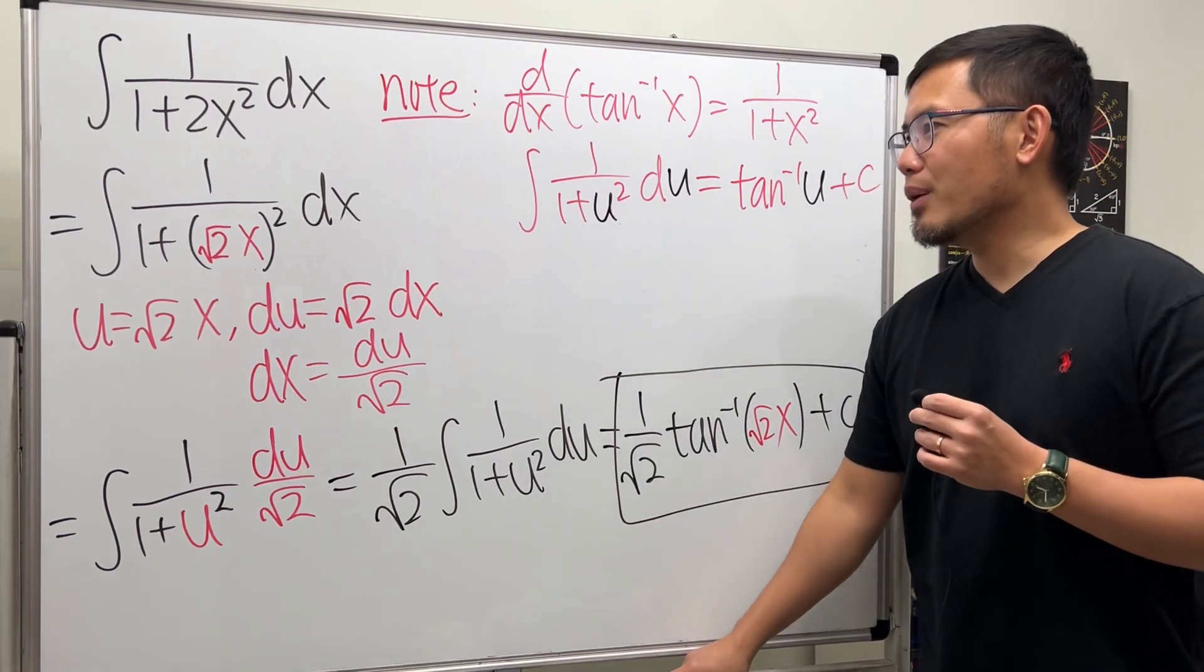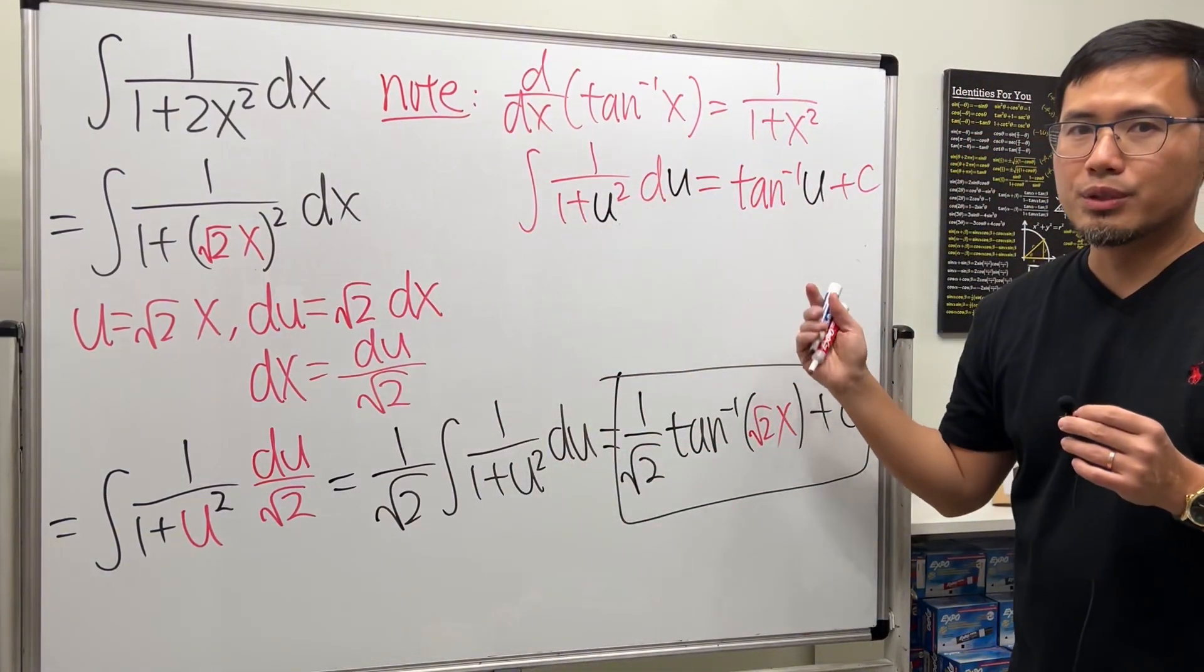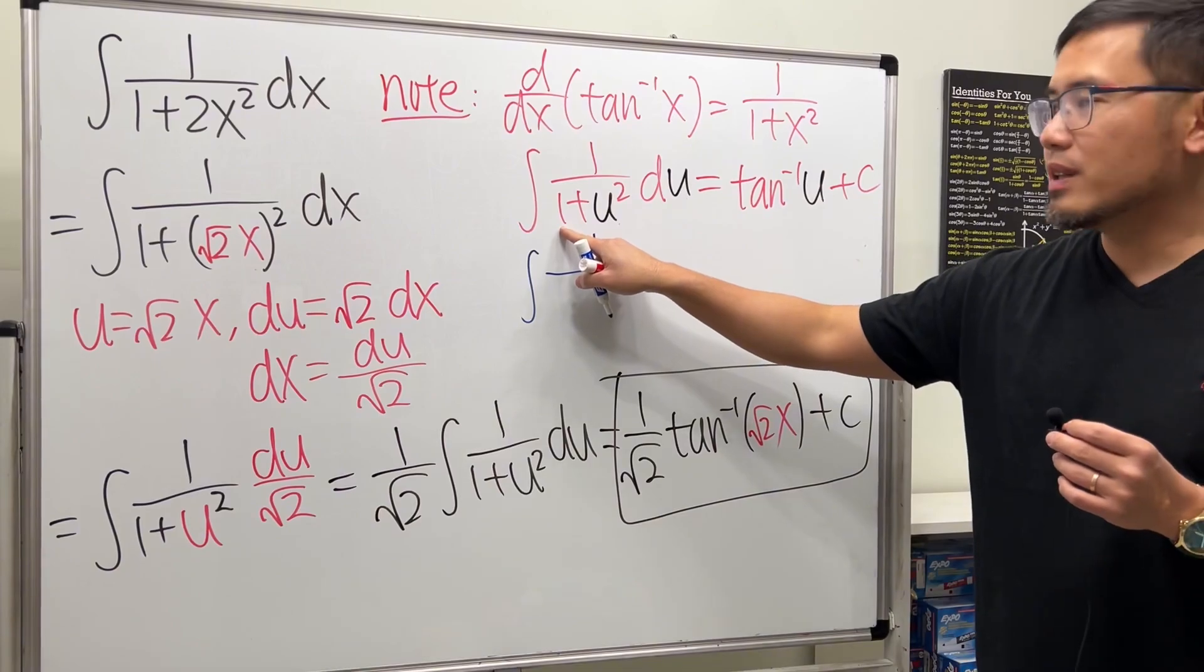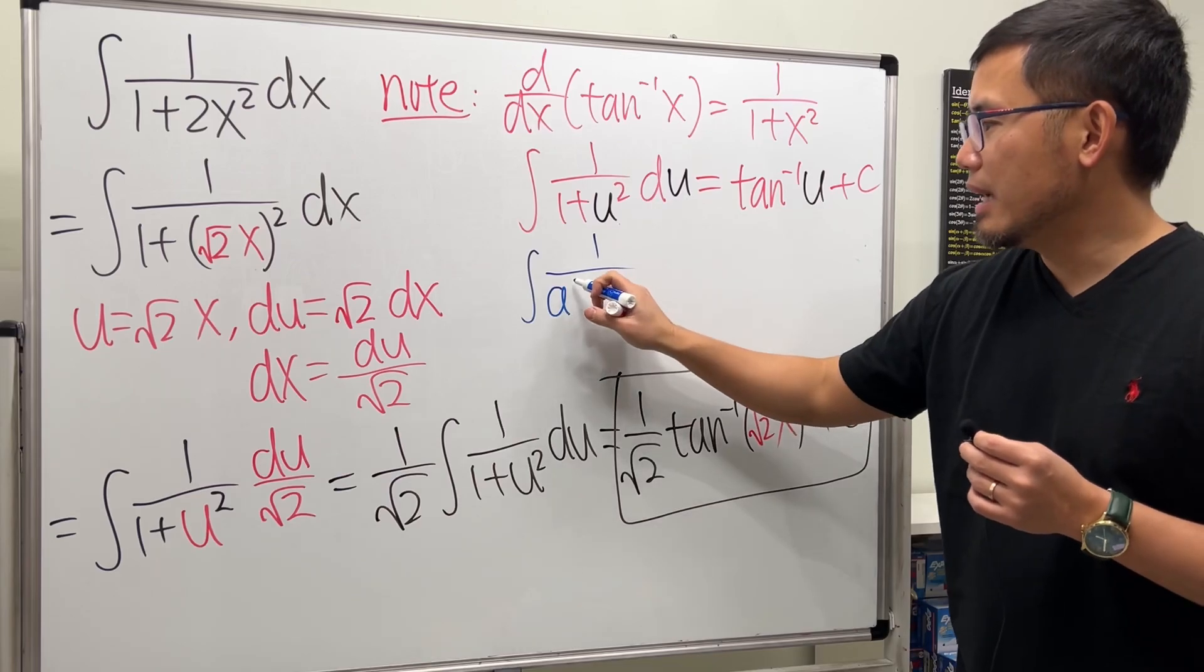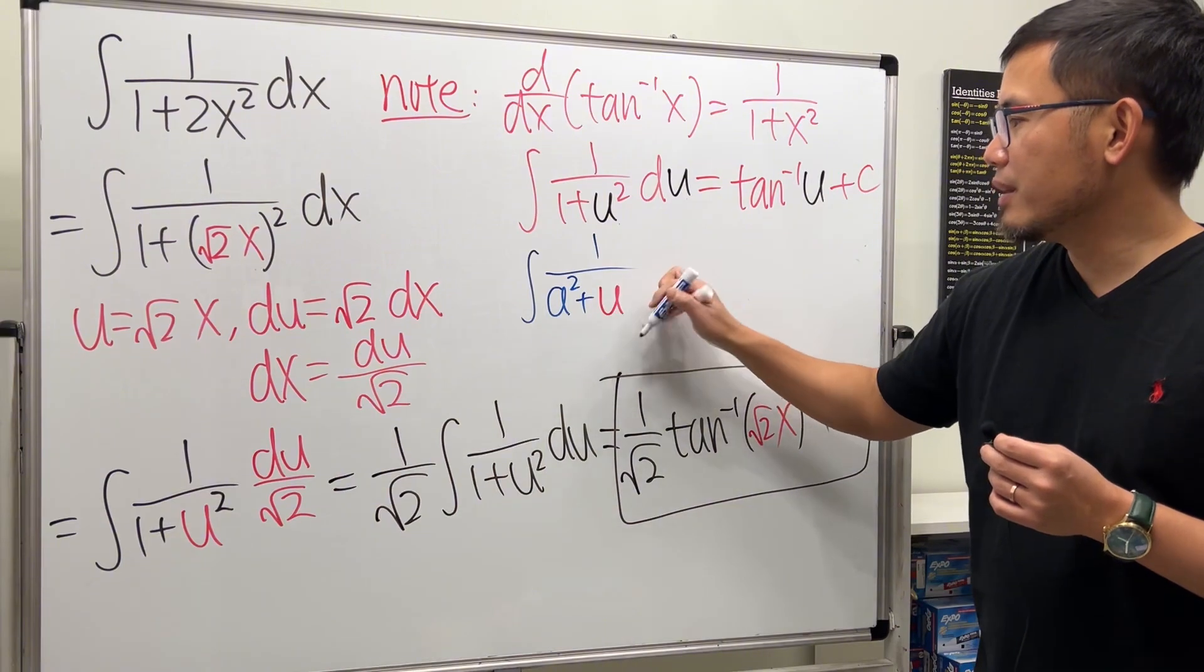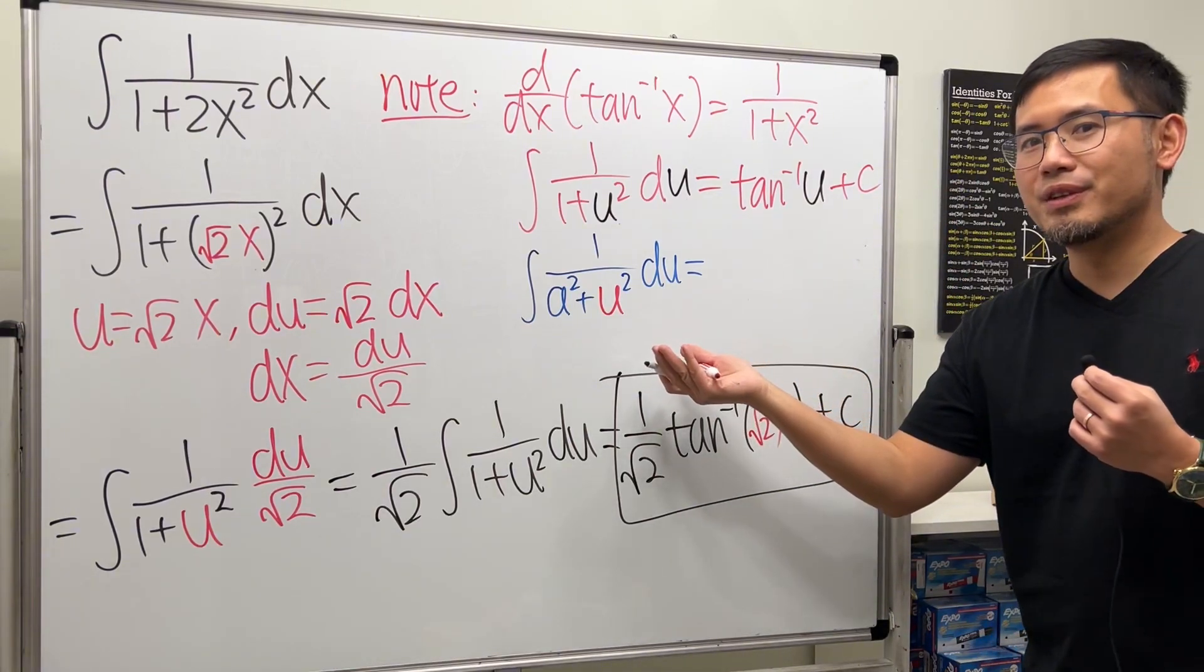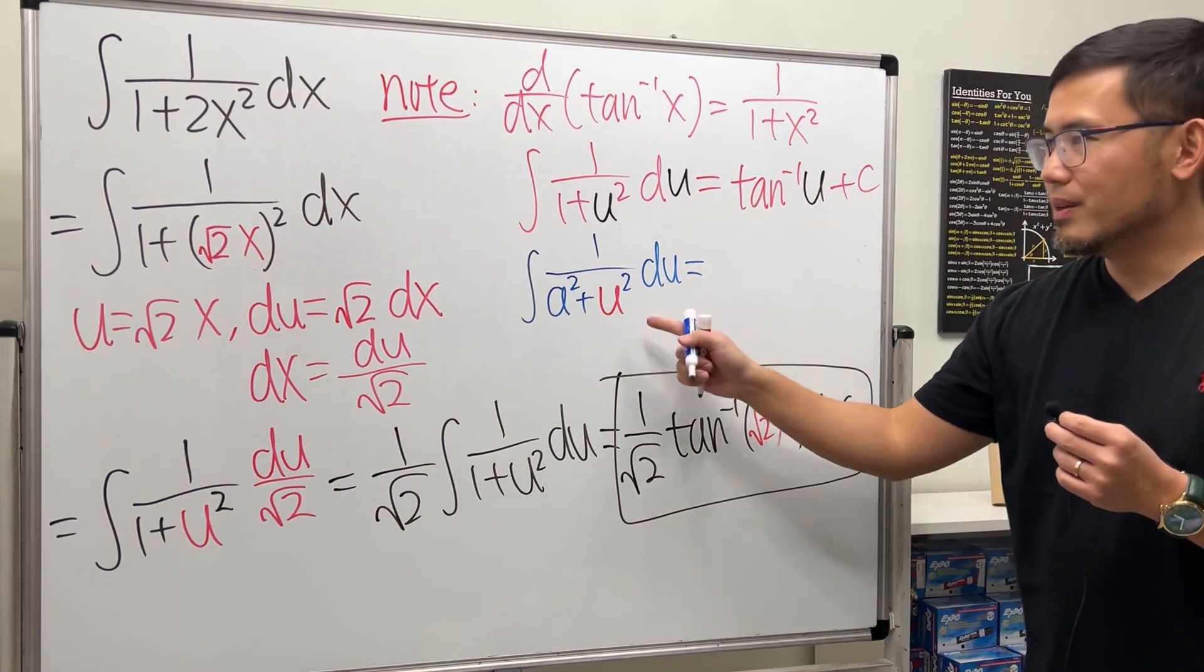This is how you solve this integral using u-sub. Here's another one you may need to know: if you have the integral of 1 over a squared plus u squared du, where you might have some number a instead of 1. I'll tell you the formula. You can think about how to prove this—I'll have another video in the description if you want to see the proof.